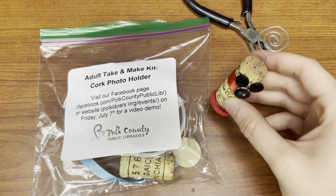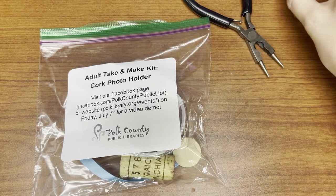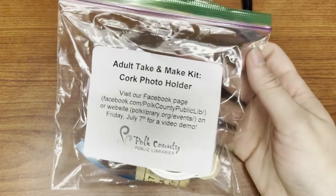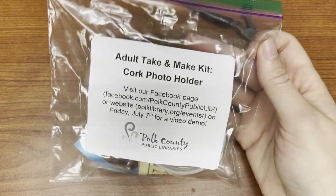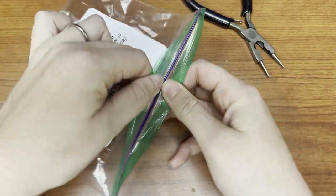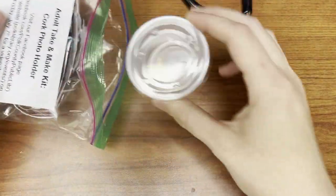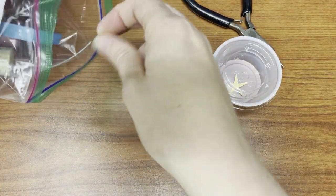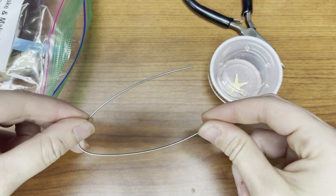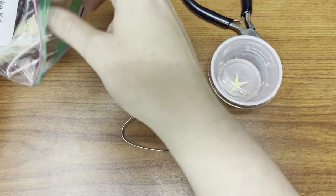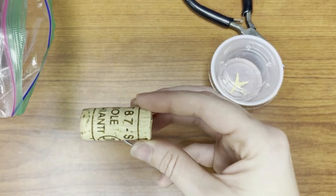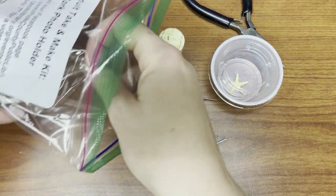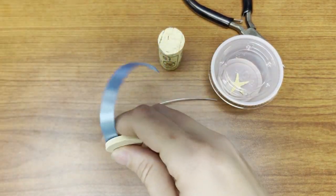Alright, so if you have picked up your craft kit from the Columbus or Saluda library, you're going to check and make sure that all of your supplies are included. You should have a starfish, a piece of wire, a cork, a piece of ribbon,